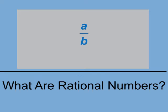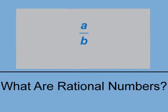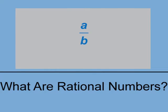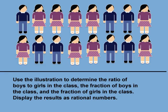In your study of integers, you saw that dividing integers sometimes resulted in a non-integer quotient. In this video, we look at a class of numbers called rational numbers, which also includes the integers. We'll use an illustration to determine the ratio of boys to girls in the class, the fraction of boys in the class, and the fraction of girls in the class, and display the results as rational numbers.